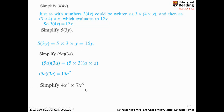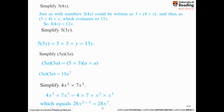Next: 4x squared times 7x to the power of 5. You may pause for a while. 4 times 7 gives 28. For the index, x squared times x to the power of 5 gives x to the power of 2 plus 5, which is x to the power of 7. So your final answer is 28x to the power of 7.